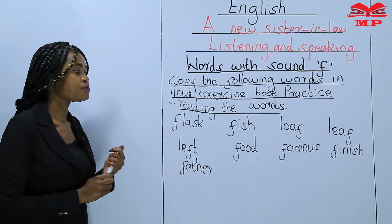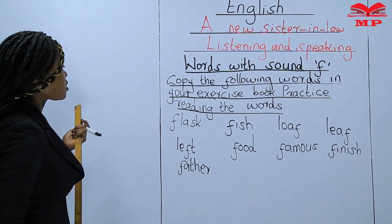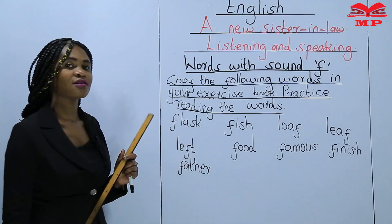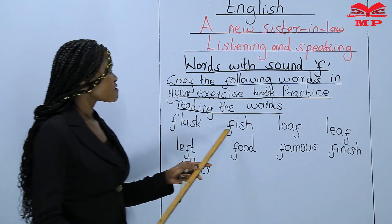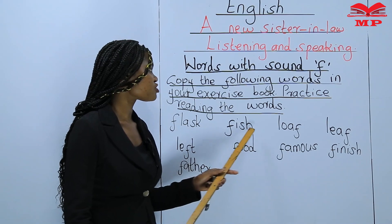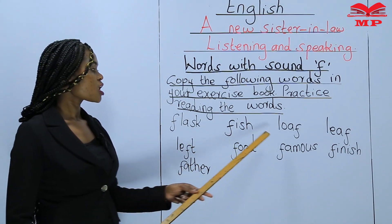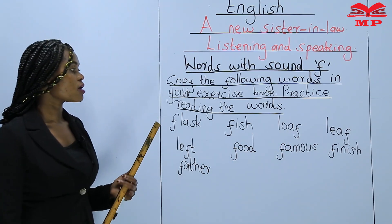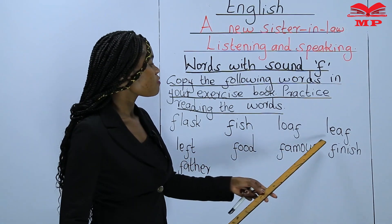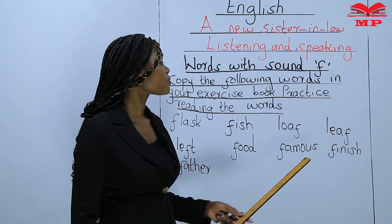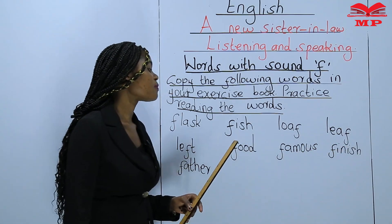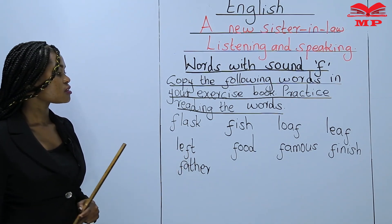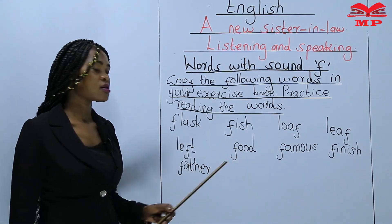Let's start with the very first word. The first word is flask. Flask. Then the second word: fish. Fish. Then loaf. Loaf — look at the word very well. Then after the third word we have leaf. Leaf. Left. Left.